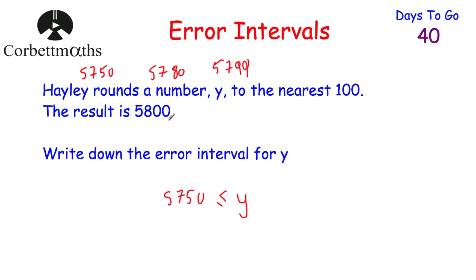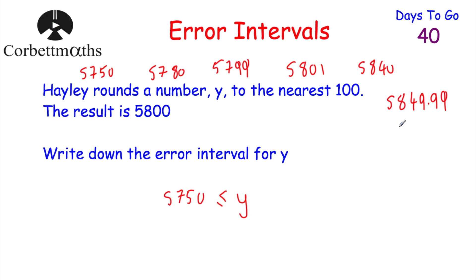Now let's think of numbers bigger than 5,800. It could be 5,801, 5,840, or even 5,849.99 — all round to 5,800. But it couldn't be 5,850, because if we rounded 5,850 to the nearest hundred, it would be 5,900. So it could be anything up to but not including 5,850. That means y would have to be bigger than or equal to 5,750, but less than 5,850. Well done if you got that.